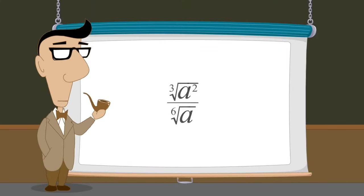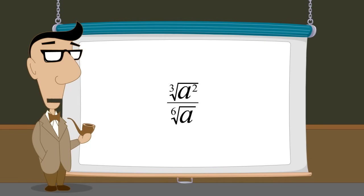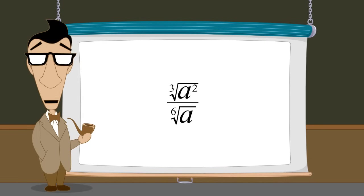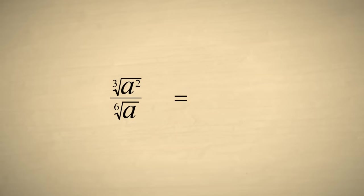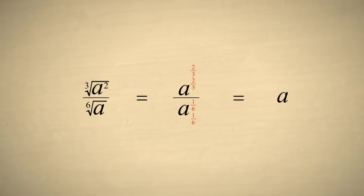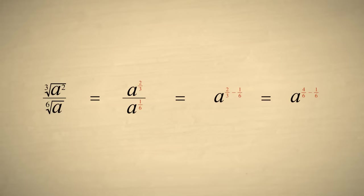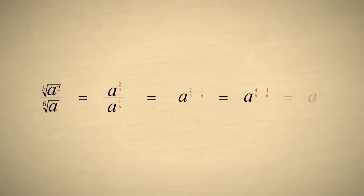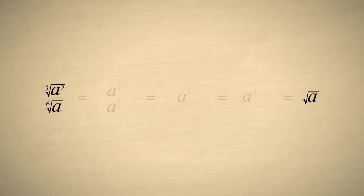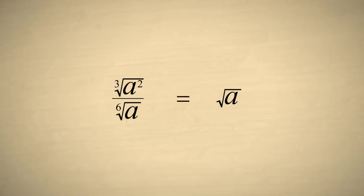Let's do one more example, simplifying the cube root of a squared over the sixth root of a. We can start by writing the cube root of a squared as a to the two-thirds, and the sixth root of a as a to the one-sixth. We then subtract the exponents two-thirds and one-sixth. Using the common denominator six, we can write this as four-sixths minus one-sixth, which is three-sixths, or one-half. Of course a to the one-half is the square root of a. So the cube root of a squared over the sixth root of a can be simply written as the square root of a.